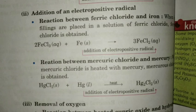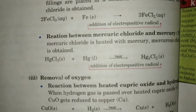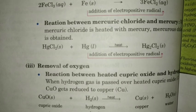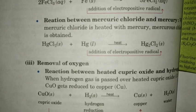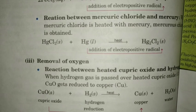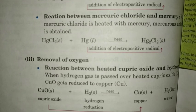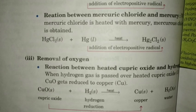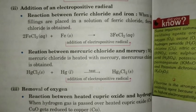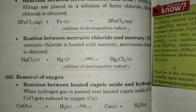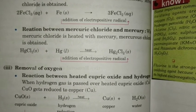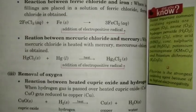Next point: addition of an electropositive radical. The reaction between ferric chloride FeCl3 and iron Fe is an example of addition of an electropositive radical. Fe has charges Fe2+ and Fe3+, so addition of an electropositive radical takes place, and hence it is an example of reduction reaction — Fe is getting reduced to FeCl2. The second example is the reaction between mercury chloride and mercury — HG, addition of electropositive radical gives HG2Cl2, so this is also an example of reduction reaction.